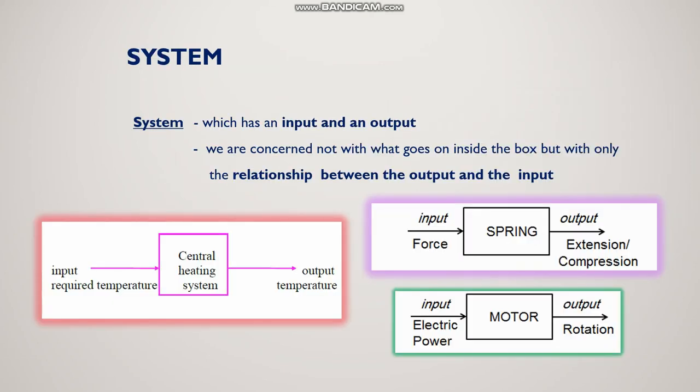What is meant by system? It is a collection of many components which has an input and an output. Sometimes there will be multiple inputs and multiple outputs expected. We are concerned not with what goes inside the system but only the relation between the input and output. We need one required output, and to get that we combine different components to make a system.